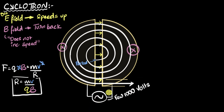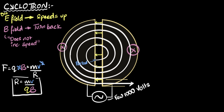As an engineer, if you were to design this oscillator, a couple of questions that come to mind: one, should this flipping be at a constant frequency, or should that frequency keep changing because we have a very complicated spiral motion happening? The second thing is, how do I calculate at what frequency this electric field should flip so that my cyclotron works properly?